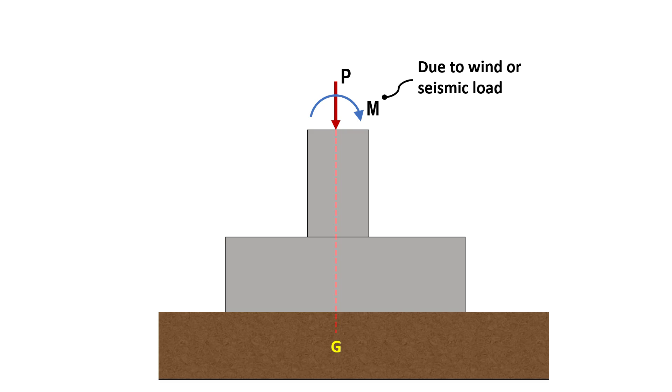However, if the moment is due to reversible loads like wind or seismic forces, shifting the footing is not advisable. In such cases, a symmetrical footing relative to the column is preferred, ensuring the eccentricity remains within the mid third to avoid negative soil pressure.